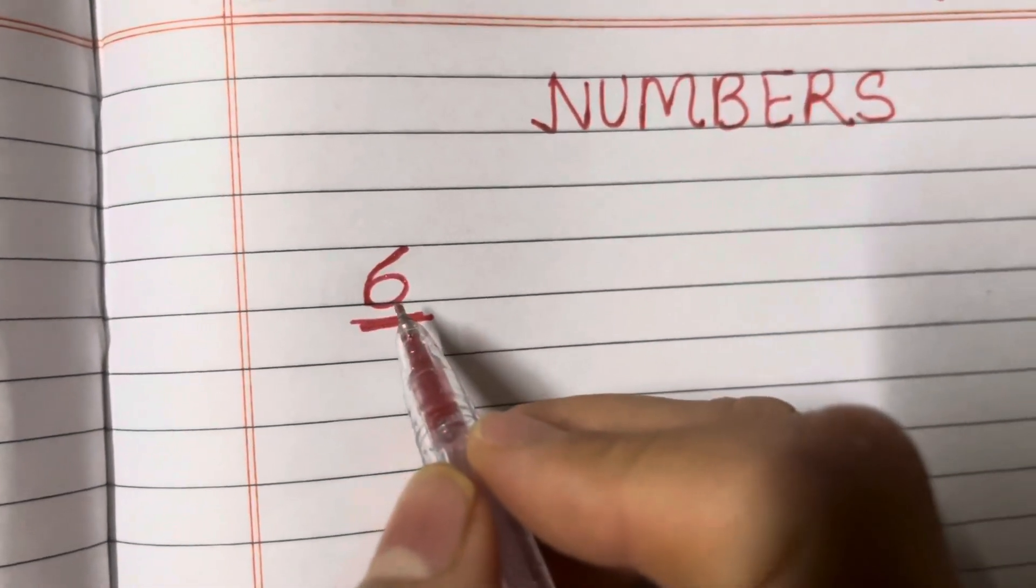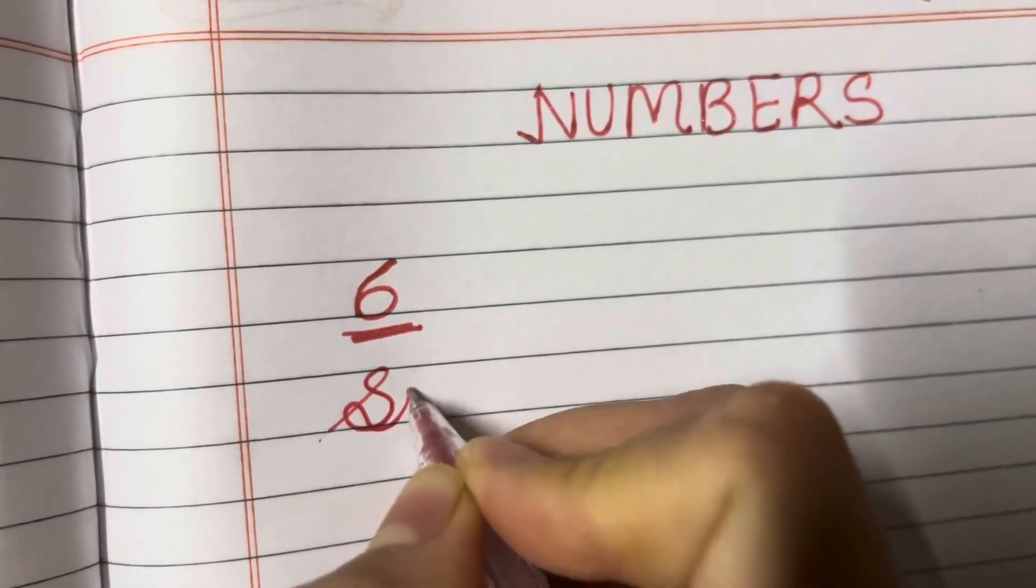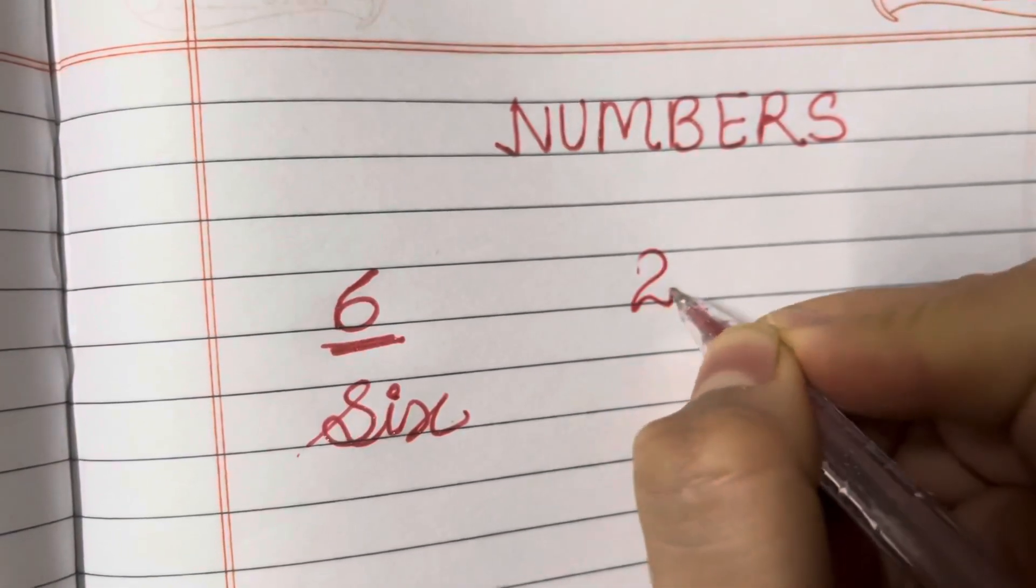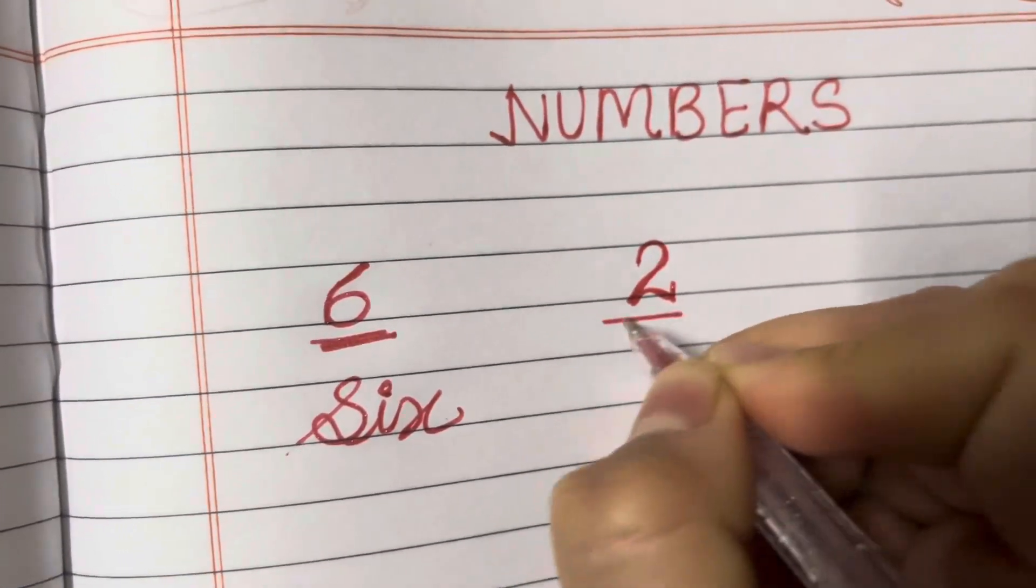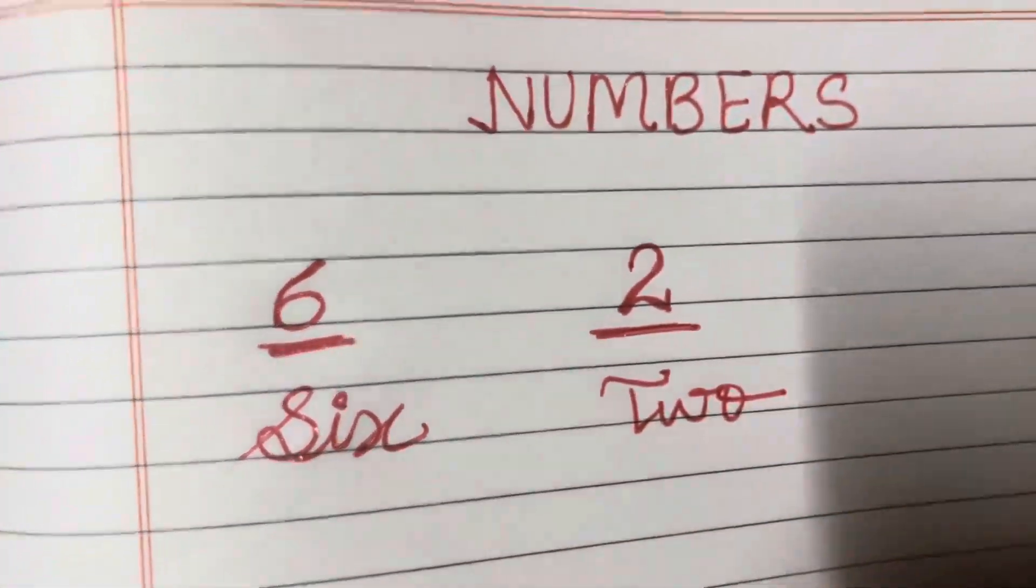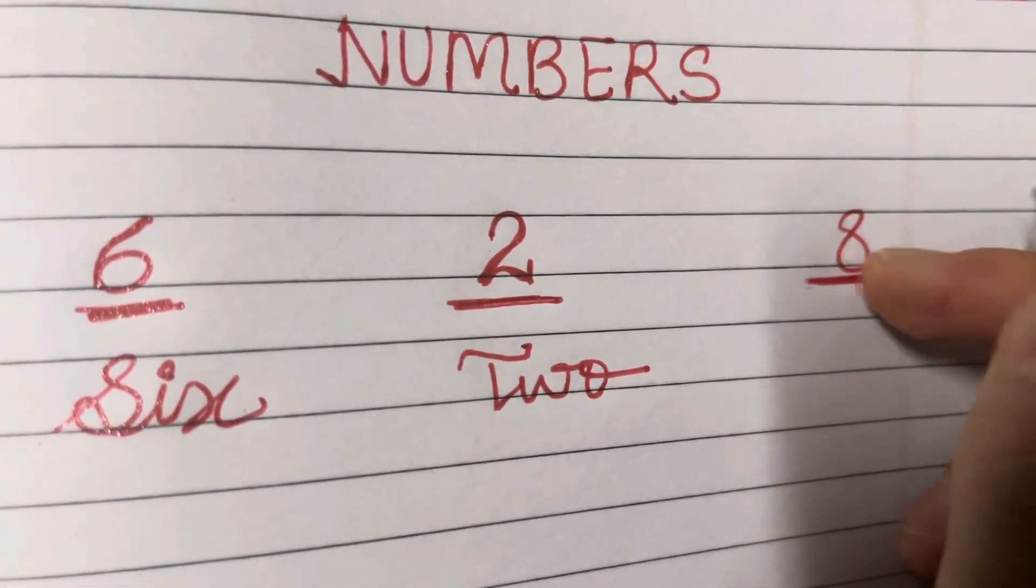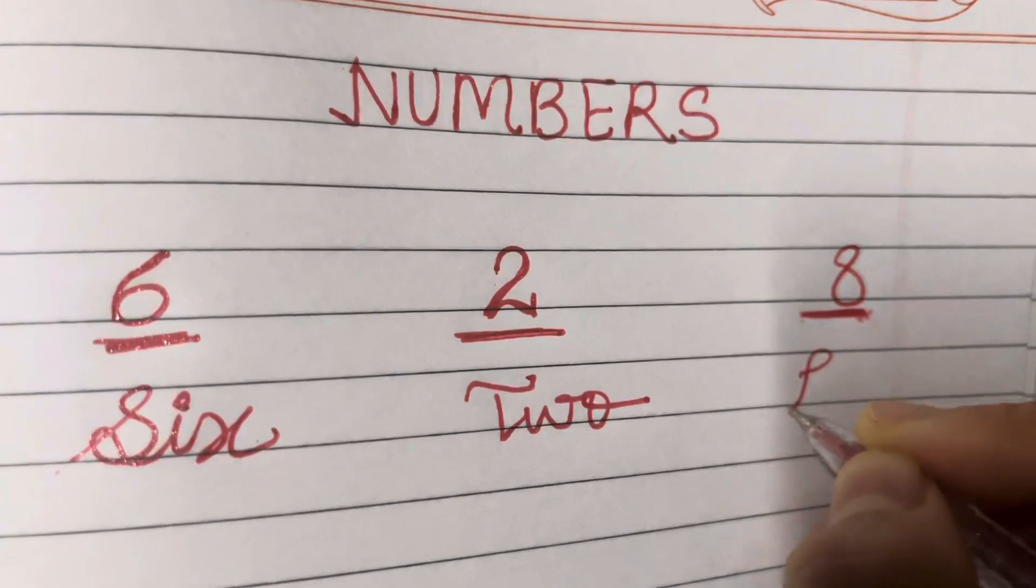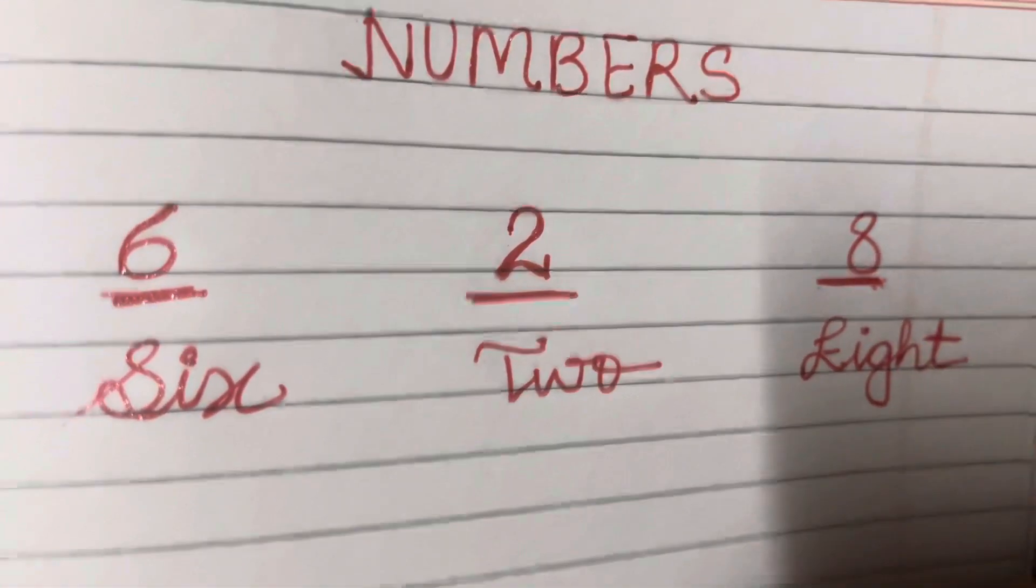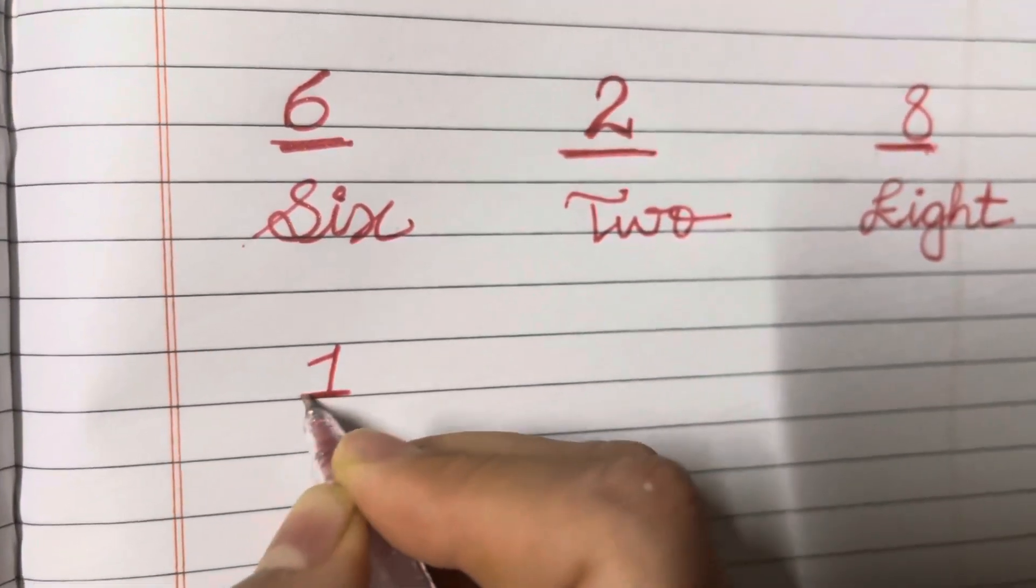Which number is it? It's six. What's the spelling of six? S-I-X. The next number is number 2. T-W-O. Next number, can you tell me which number it is? It's 8. E-I-G-H-T. Next number is number 1.